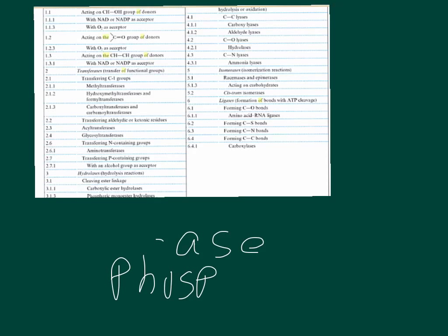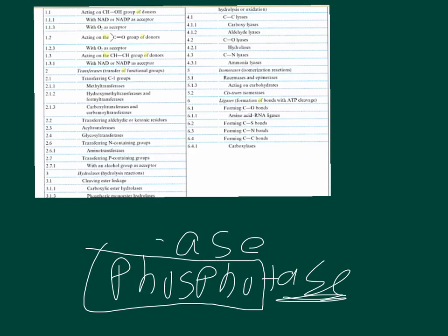So phosphatase. And you would know that it was an enzyme by the A-S-E ending. The first part of the name would usually be the substrate that the enzyme acted upon. So in this case, it would be a phosphate. It would have been a phosphate and then the A-S-E ending.